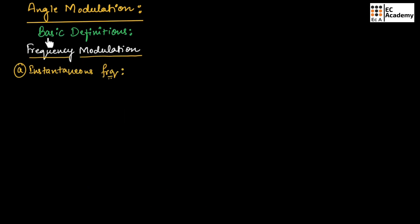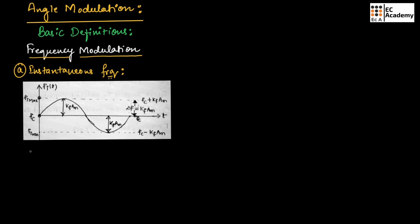Now let us understand some basic definitions. The most common angle modulation that is used is frequency modulation. We will see some basic definitions with respect to frequency modulation. First, let us understand instantaneous frequency. Mathematically, the instantaneous frequency can be written as fi(t) = Fc + Kf·m(t).